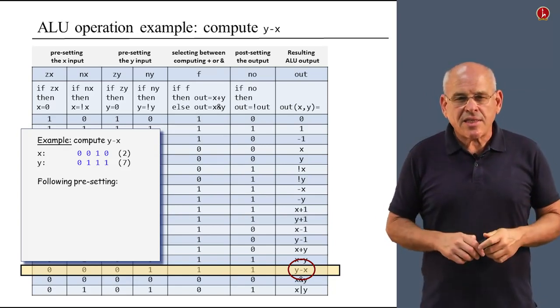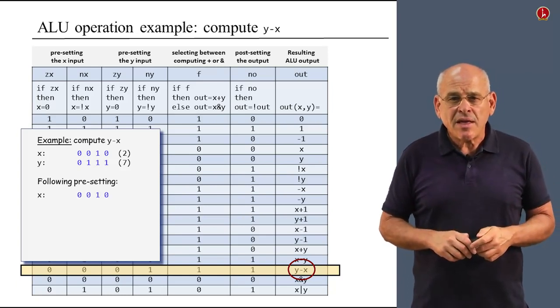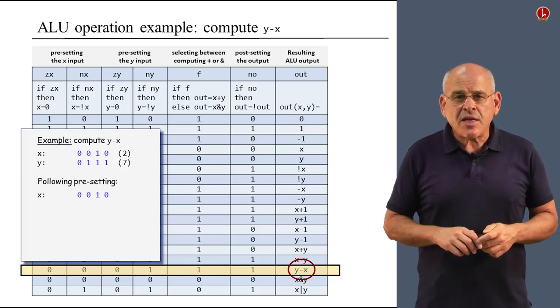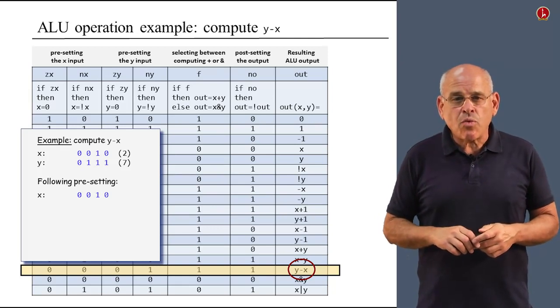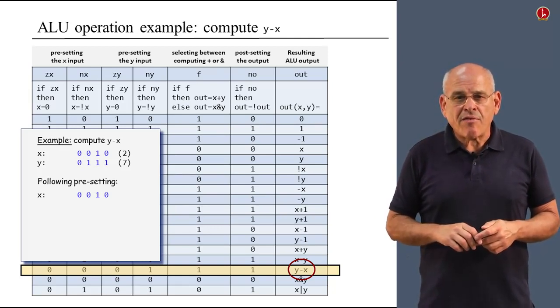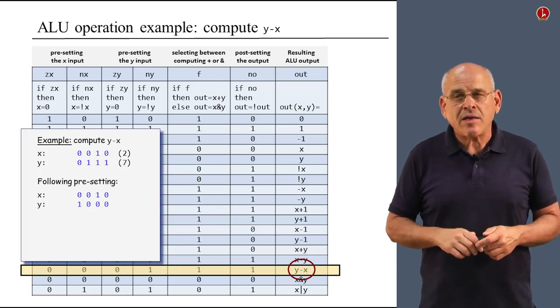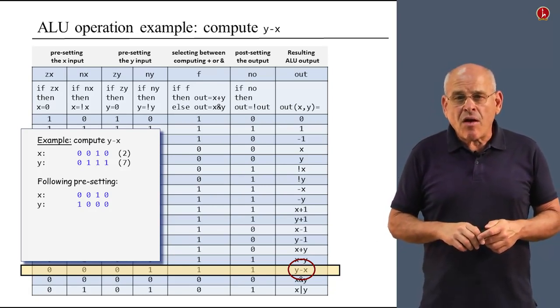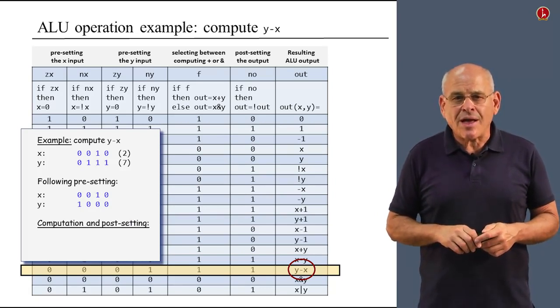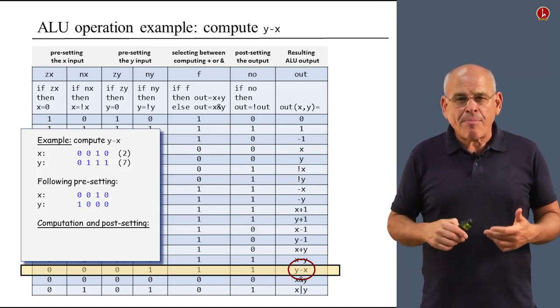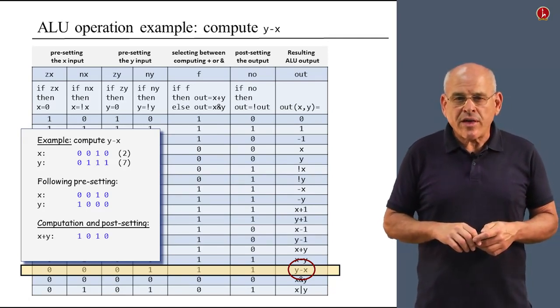So we see that zx is zero and nx is zero, so we don't touch the x input. It remains as is. And moving along, we see that zy is zero, so we don't touch the y input. But ny is one, which means that we have to negate it. So zero, one, one, one became one, zero, zero, zero. Moving along, we see that f equals one, so we compute the addition. And if we add up x and y, we get one, zero, one, zero. No also equals one, so we negate the result and we get zero, one, zero, one.